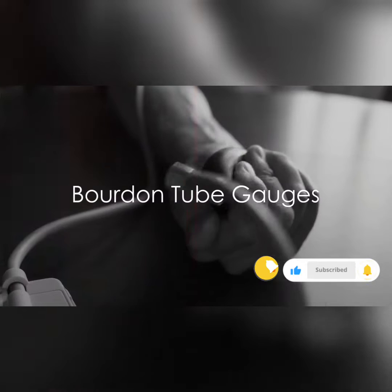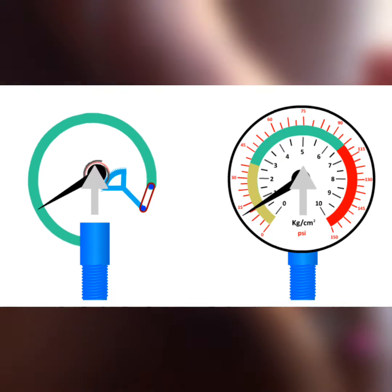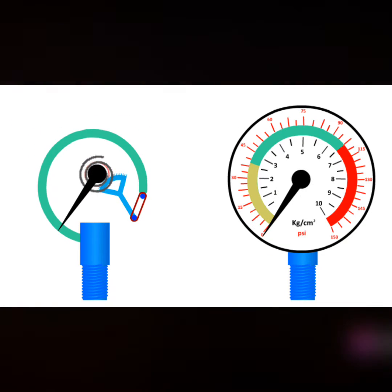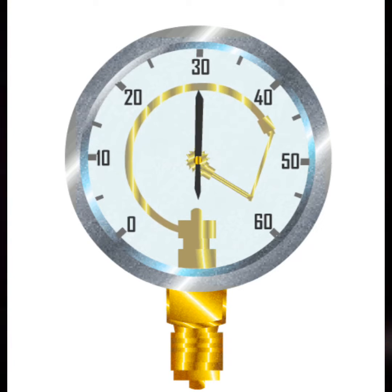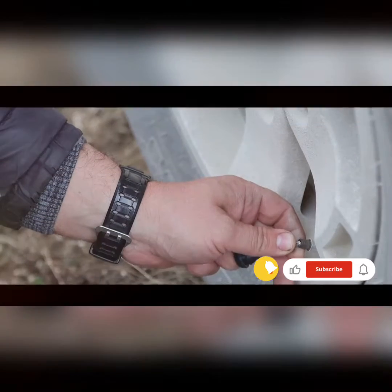Next, we have Bourdon tube gauges. These are mechanical pressure gauges that employ a curved tube, which deflects when pressure is applied. This deflection then gets converted into a pressure reading on a dial.